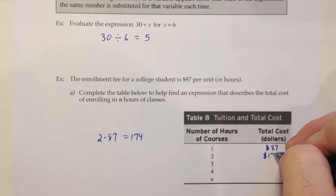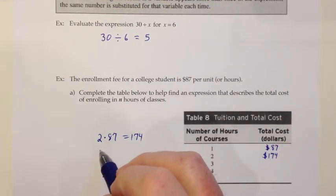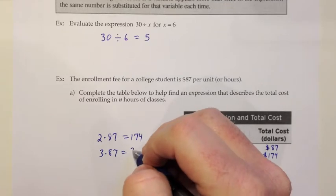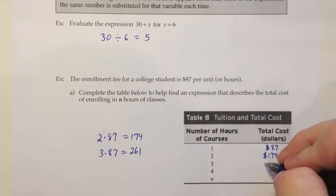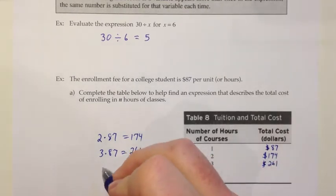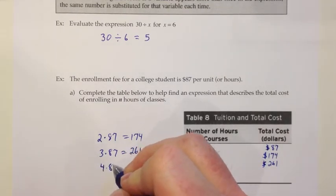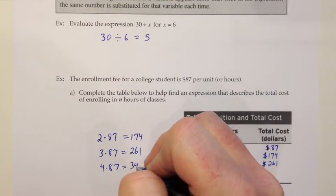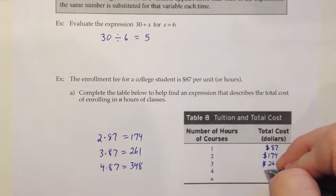Two times 87 is 174, so I'd fill that in on the chart for two units or two hours. What if they're taking three units? Same idea, three times 87, which gives us 261. And what if they were taking four units? Four times 87 is 348.